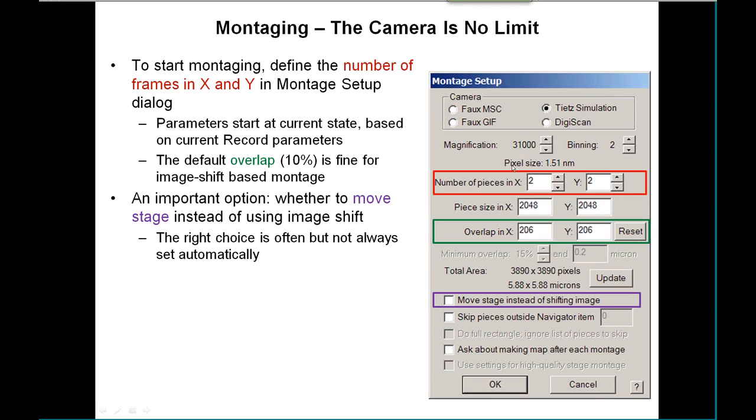The other parameters in here will start at the current microscope state based on the current record parameters, although you can change them at this point. The overlap that you get when you're doing a montage with image shift is usually quite fine—ten percent overlap can be more of an issue when you're taking stage montages.